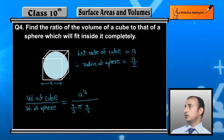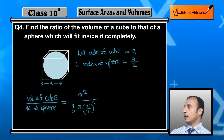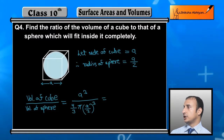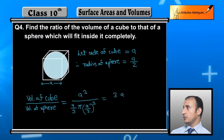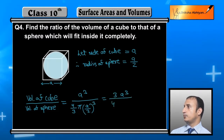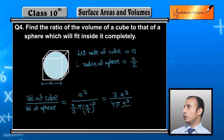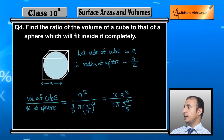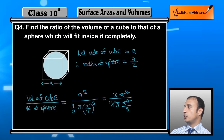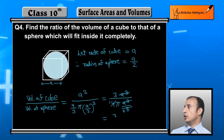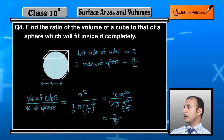Substituting r = a/2 and solving: the expression becomes 3a³ / (4π × (a/2)³) = 3a³ / (4π × a³/8). The a³ terms cancel out, leaving 3 × 8 / (4π) = 24/(4π) = 6/π.